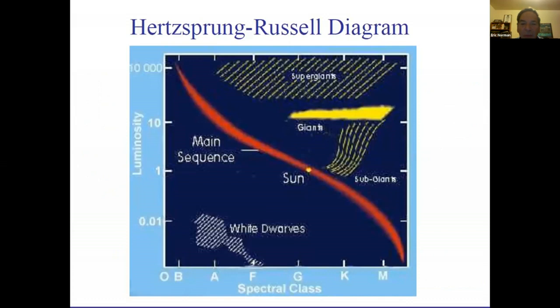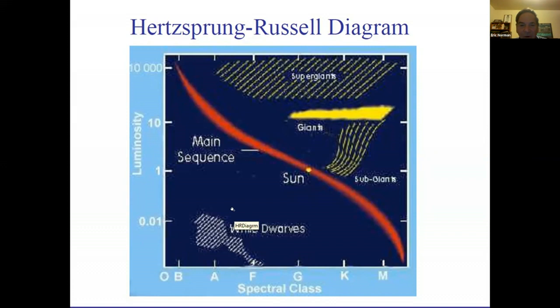Moving on from Big Bang nucleosynthesis, astronomers studying light from stars put together the Hertzsprung-Russell diagram, plotting the temperature (spectral class) versus luminosity of stars. High temperature is on the left, lower temperatures to the right. Roughly 80% of all stars fall in a roughly diagonal band called the main sequence; our Sun is here, a fairly ordinary star. In the upper right are cool but very bright giant stars, and in the lower left are very dim but hot stars called white dwarfs.